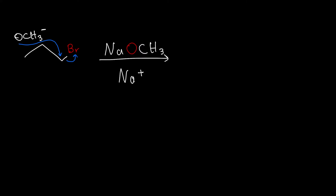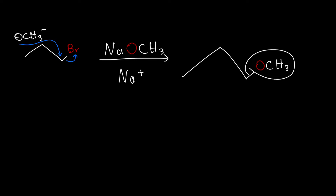So at the end, what you're going to get is an ether — an OCH3, which is a methoxy group. Then the bromine will have left and turned into a bromide ion.